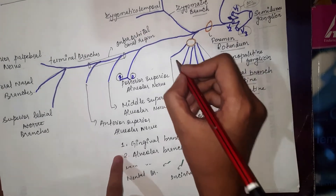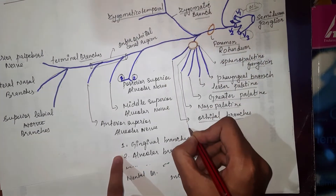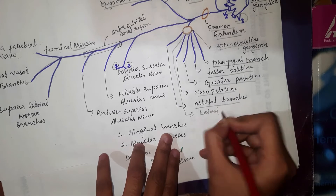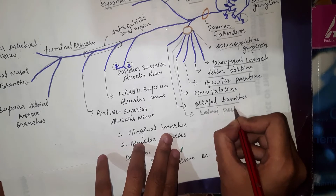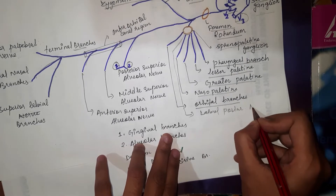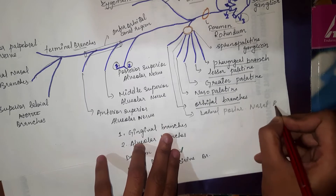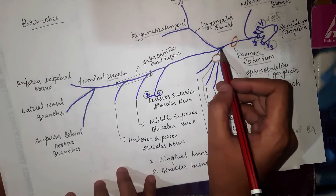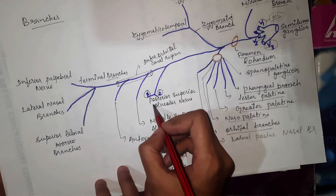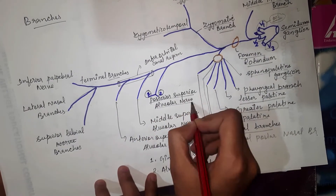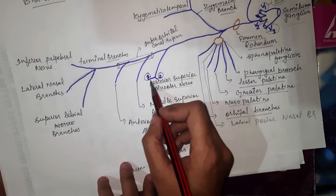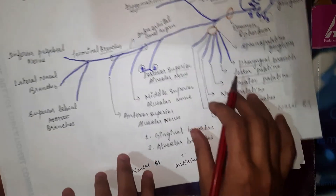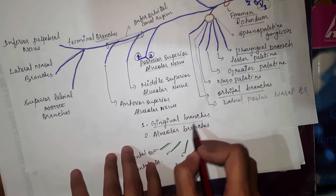One more branch it gives is called the lateral posterior nasal branch. It then gives one more branch called the posterior superior alveolar nerve, which further gives two branches: the gingival branch and the alveolar branch.